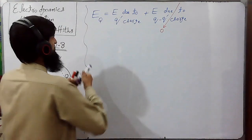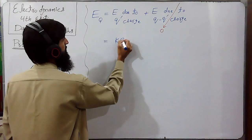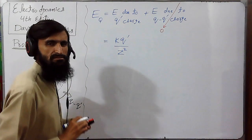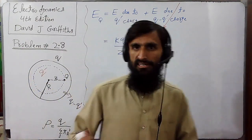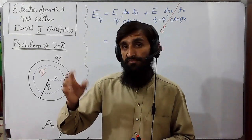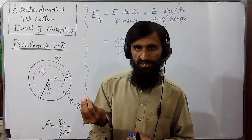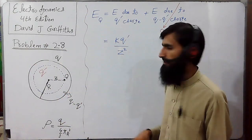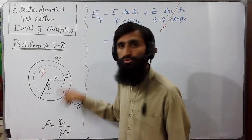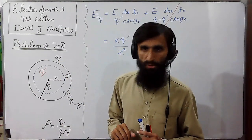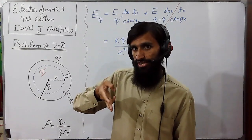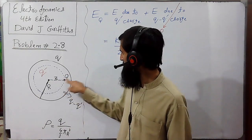Therefore, the electric field at point Q equals K Q dash divided by Z squared, since point Q is an exterior point with respect to all of charge Q dash — just as we calculated earlier for the exterior case. Here Z is the distance of our point in question from the center of the sphere. Let's call this equation number 1.